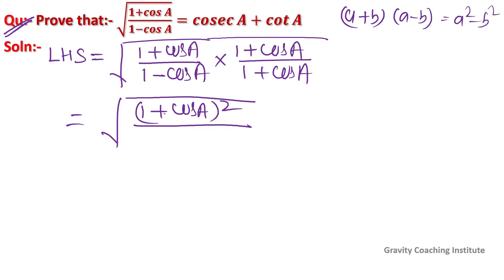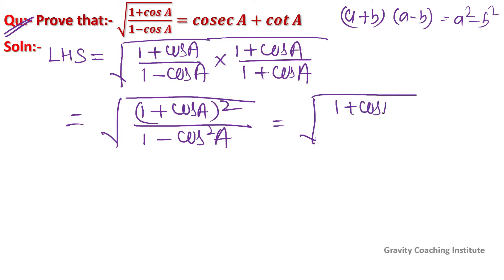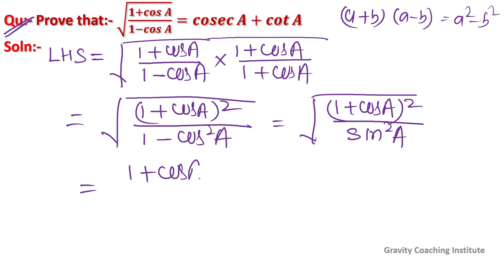So the denominator becomes 1 minus cos square A. This gives us root under (1 plus cos A) whole square upon (1 minus cos square A). We know that 1 minus cos square A equals sin square A, so this simplifies to (1 plus cos A) upon sin A.